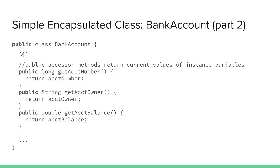Continuing this class, we include getter methods — accessor methods — for all three of our instance variables. We'll let someone know what the account number is if they ask, who the account owner is if they ask, and what the current balance is if they ask. These three public methods form part of the interface of this class. We're returning the value of each of these variables, but we're not exposing direct access — we're just returning a copy of each of those values.